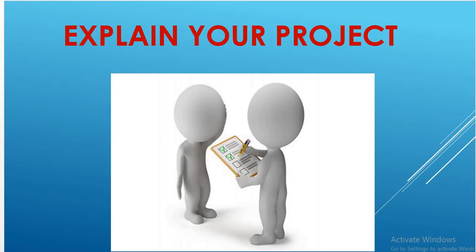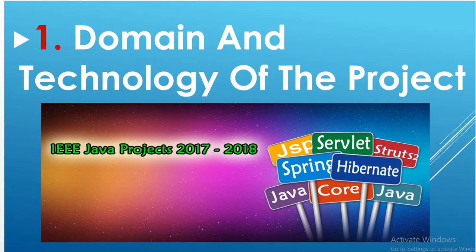Let's start with the first point: domain and technology of the project. Which domain is your company working in and which technology have you used? For example, if you are working on the telecom domain, you can say our company works on the telecom domain and we have used Java, Spring, Hibernate, REST API, or any technology like .NET or C++ that you are using in your project.